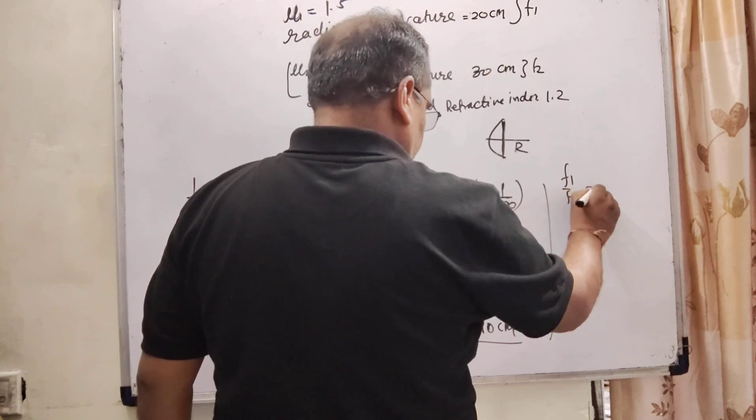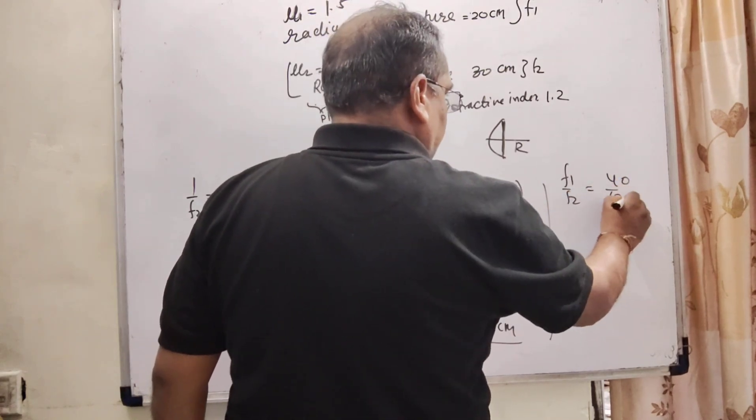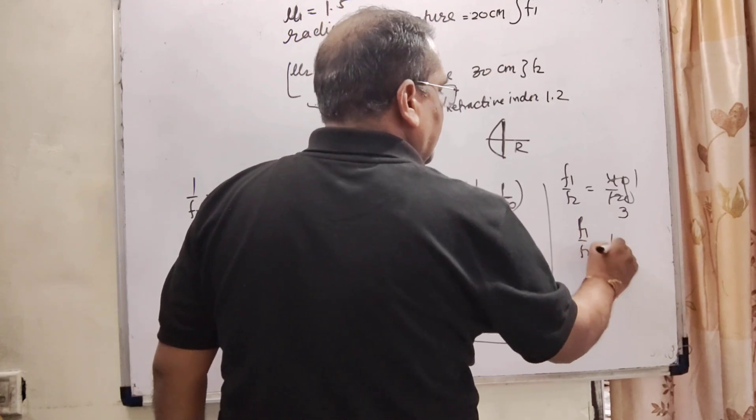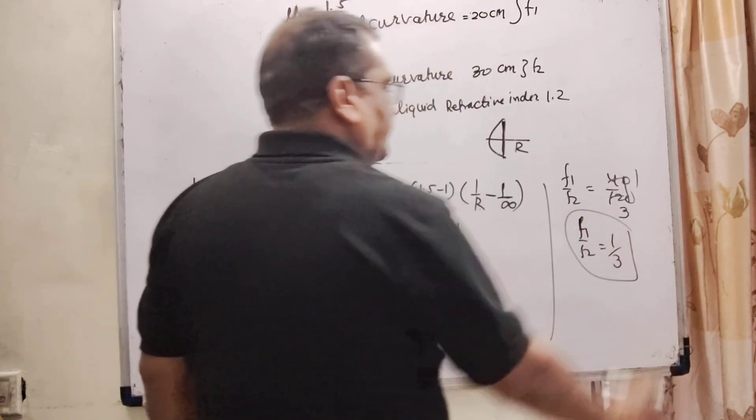So here we have to find out f1 by f2. So f1 by f2 that is 40 by 120. 4 times 1 is 4, 4 times 3 is 12. So f1 by f2 equal to 1 by 3.